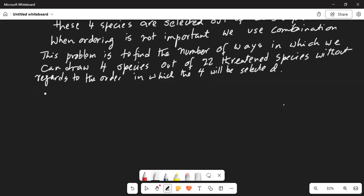So as I mentioned before, your sample size n equal to 22 and you're going to select r equal to 4 without caring for the order in which the four will be for the order.